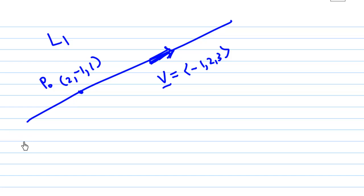So the parametric equation of the line is x = 2 + (-1)t, y = -1 + 2t, and z = 1 + 3t. Let me highlight where these things come from: (2, -1, 1) and the direction given by (-1, 2, 3). This is called the parametric equation of L1.